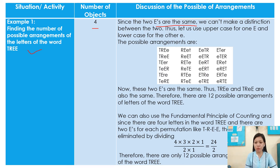Thus, let us use uppercase for one E and lowercase for the other E. So the possible arrangements include: T-R-Ee, R-E-E-T, E-E-T-R, E-T-E-R, T-R-E-E, E-T-R-E, and so on.